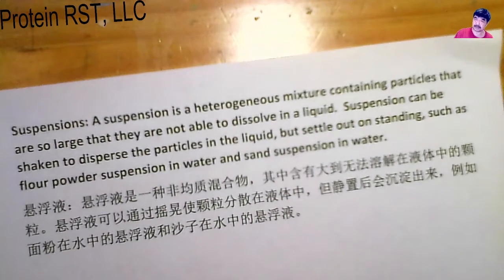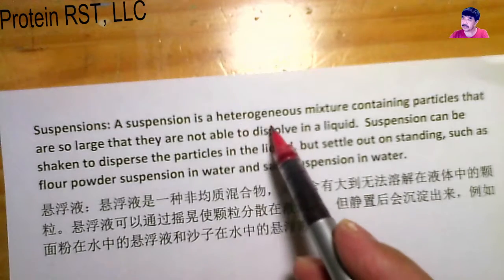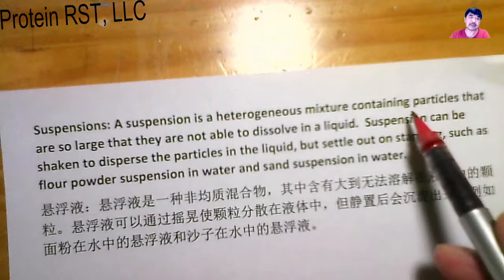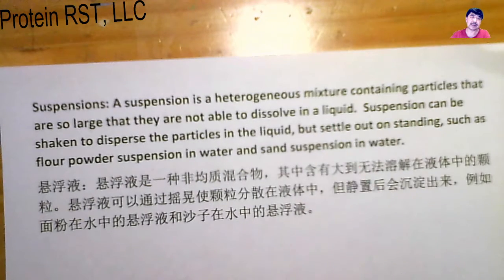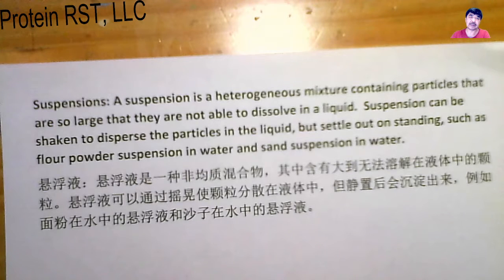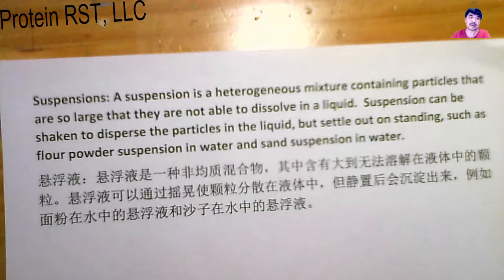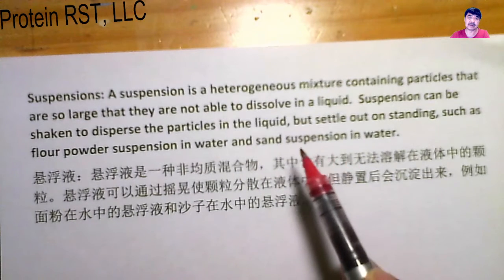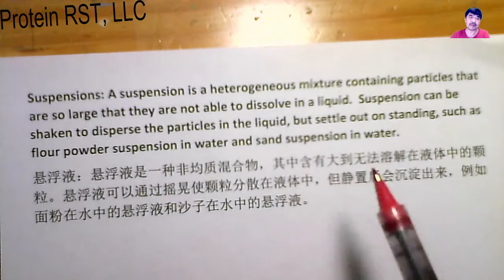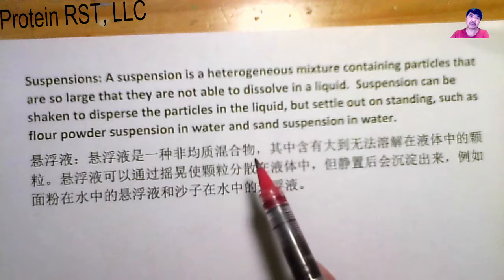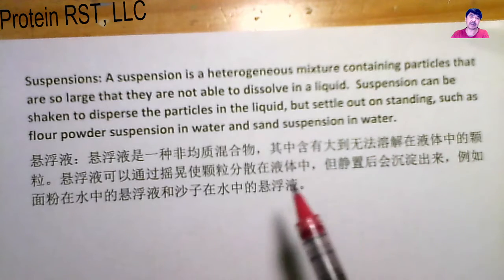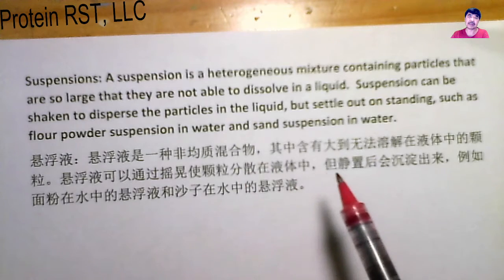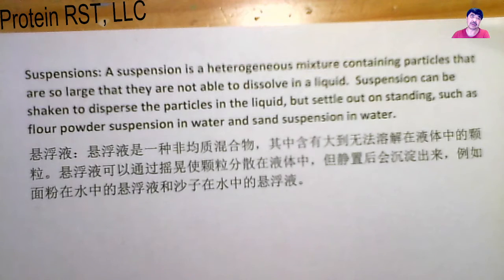The last type is called suspension. Suspension is a heterogeneous mixture containing particles that are so large that they are not able to dissolve in liquid. Suspension can be shaken to disperse the particles in the liquid, but they settle out on standing. Examples include flour powder suspension in water and sand suspension in water. 悬浮液是一种非均质混合物，其中含有大到无法溶解在液体中的颗粒。悬浮液可以通过摇晃使颗粒分散在液体中，但静置之后会沉淀出来。例如面粉在水中的悬浮液或沙子在水中的悬浮液。